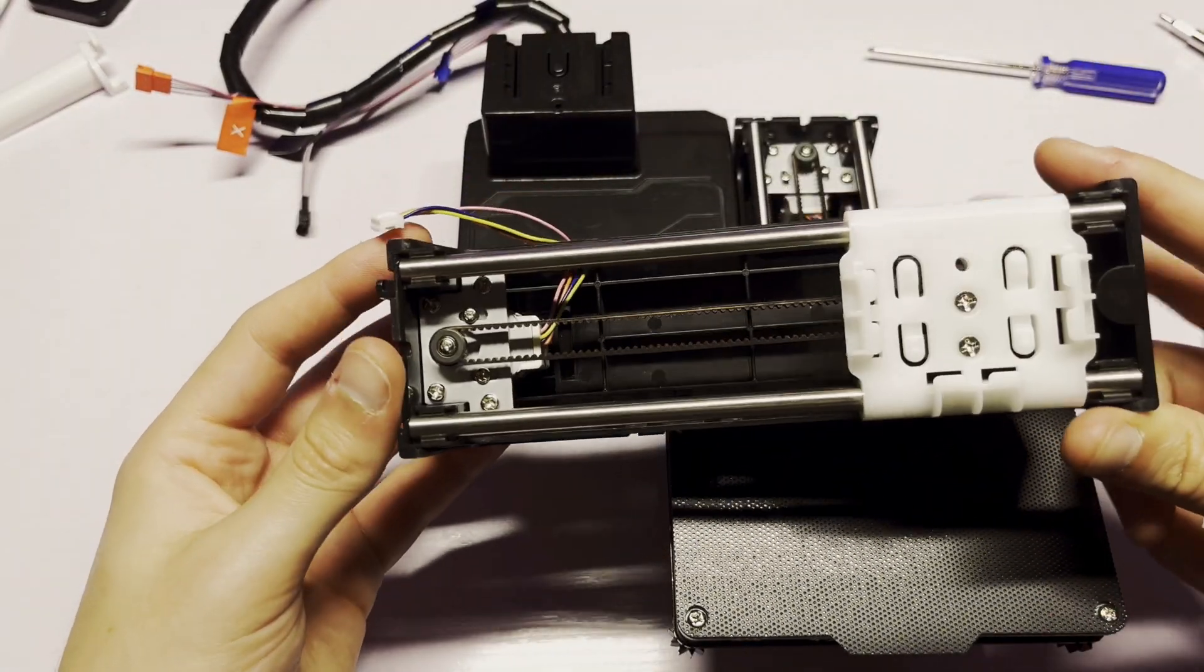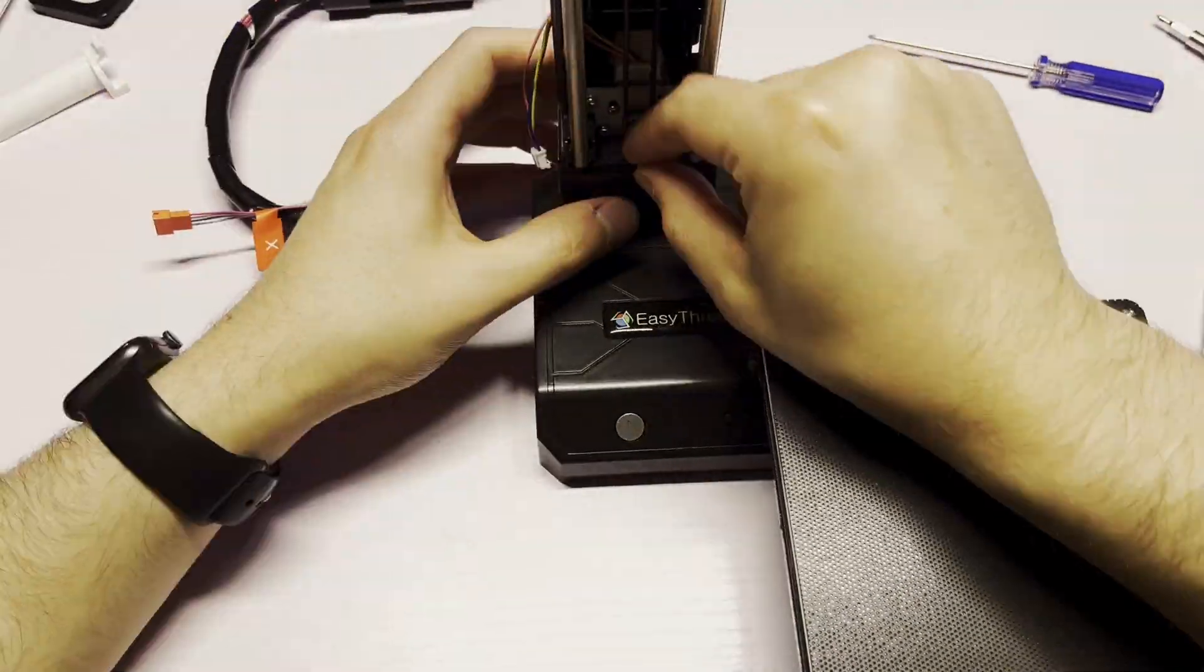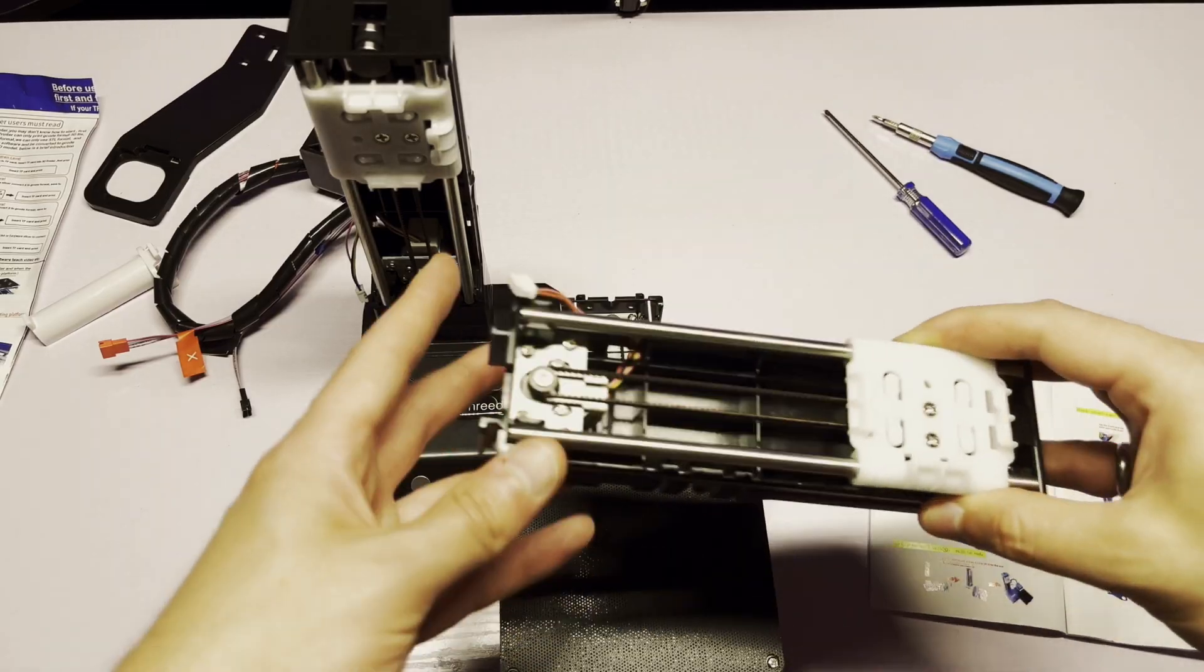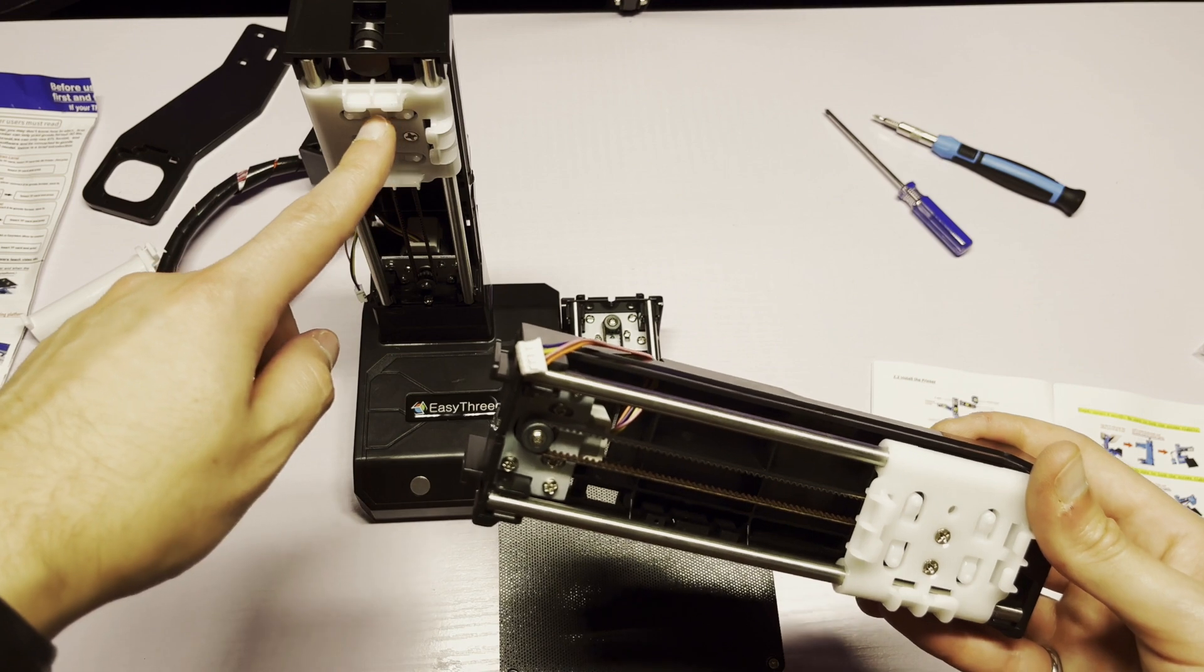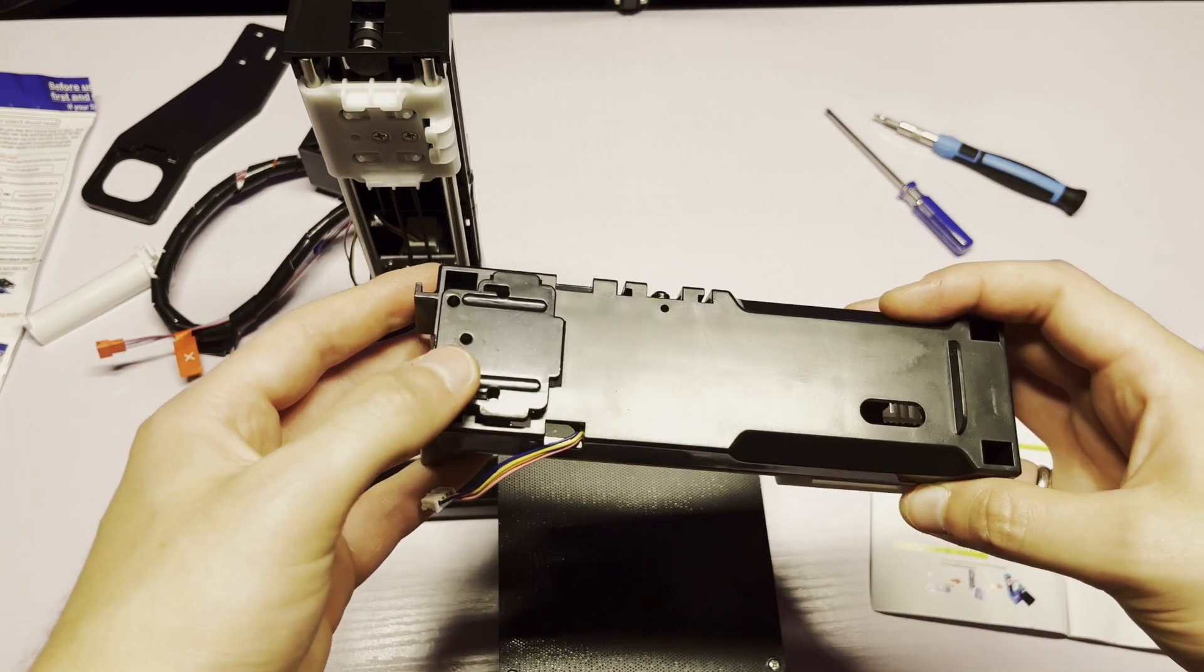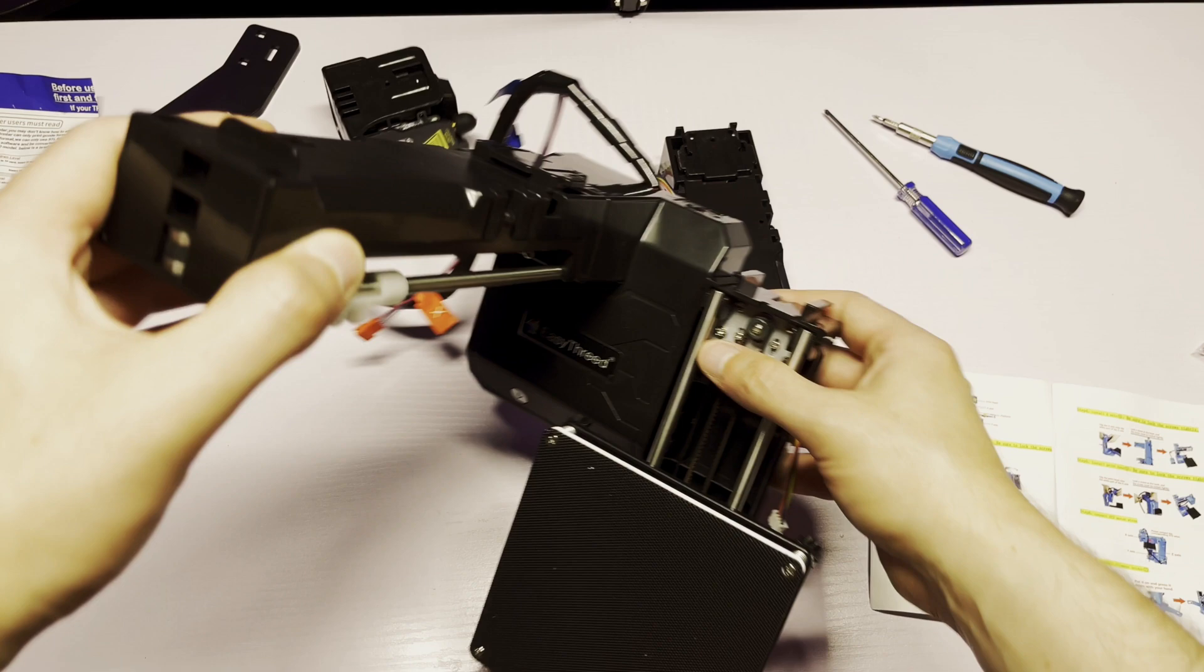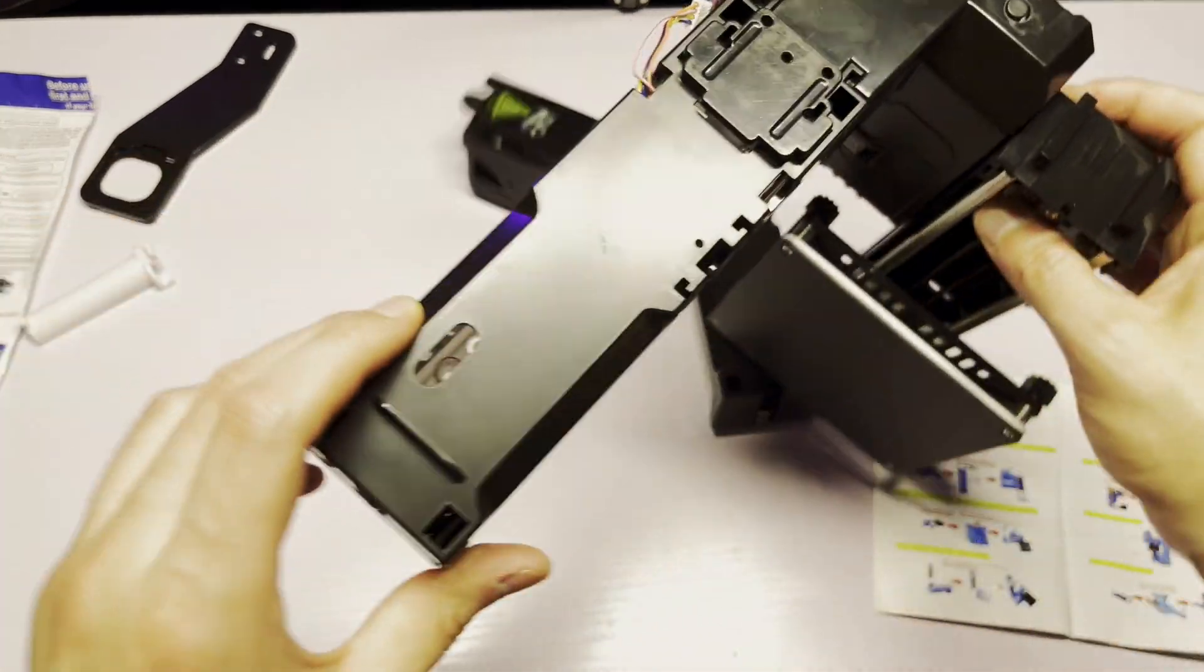The next step is to attach the Z axis to the base. Now the X axis can be installed on the Z axis. Once again, there will be a screw that secures the axis into place and it has the same configuration as the build plate, so I'll have to use my magnetic screwdriver again.